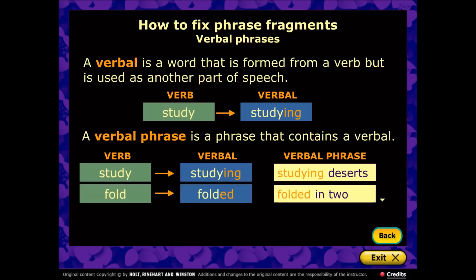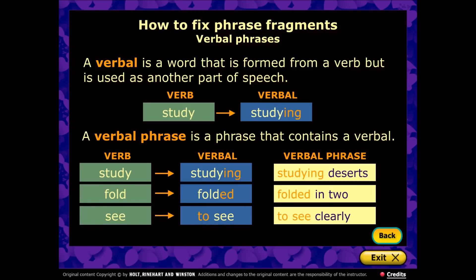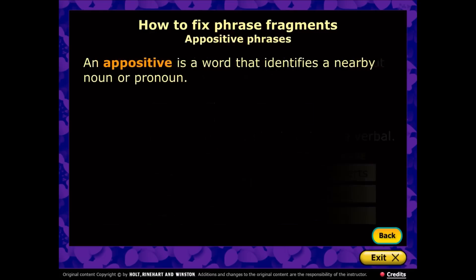Here's another example: take the verb 'fold,' add '-ed' to the end, and you get 'folded into' — that's a fragment because it's not a complete thought; the subject is missing. And this time, add the word 'to' in front of the verb 'see' — that's called an infinitive: 'to see clearly.' Again it's missing something. You might say 'To see clearly while driving is the goal of every motorist,' and then we'd have a complete thought.